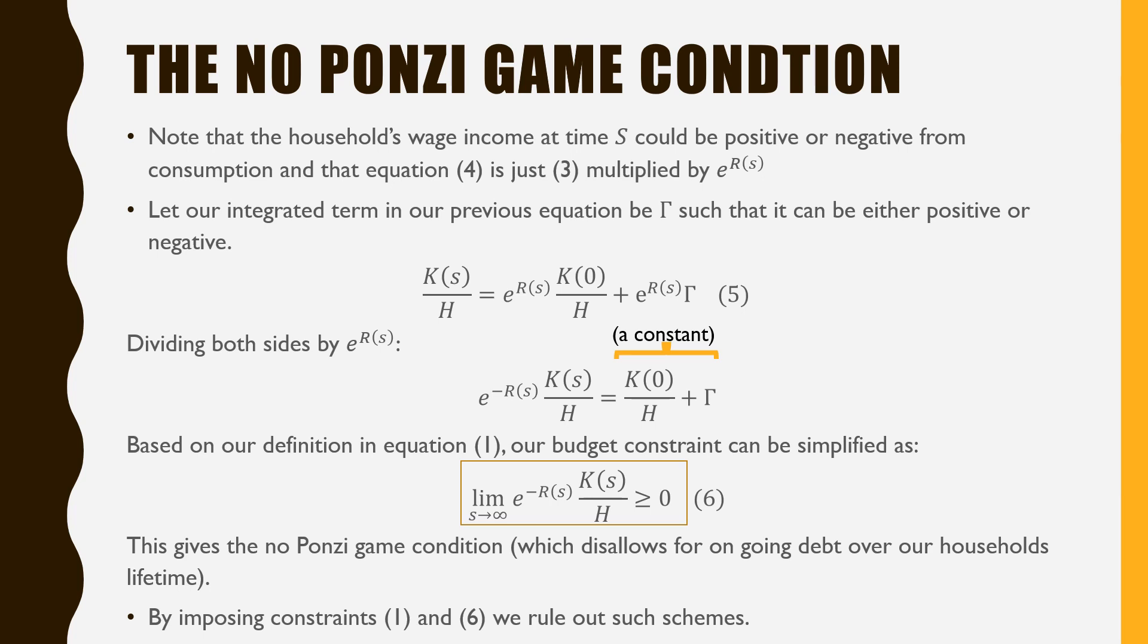This gives us the no Ponzi game condition, which disallows for ongoing debt over a household's lifetime. By imposing constraints 1 and 6, we rule out such schemes. This is what I had to say about the household's budget constraint in the RCK model. In the next video, we're going to be solving it by putting together both the household's utility function and this budget constraint. I'll see you there. Thank you.